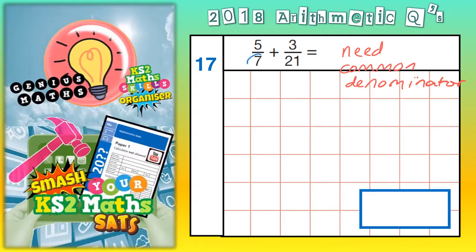So look at the two denominators, 7 and 21. Is there an easy way of making one of those numbers into the other one? Yes there is. We could triple the 7. So what we're going to do is keep the 3/21 as it is, but we're going to multiply both the 5 and the 7 by 3.